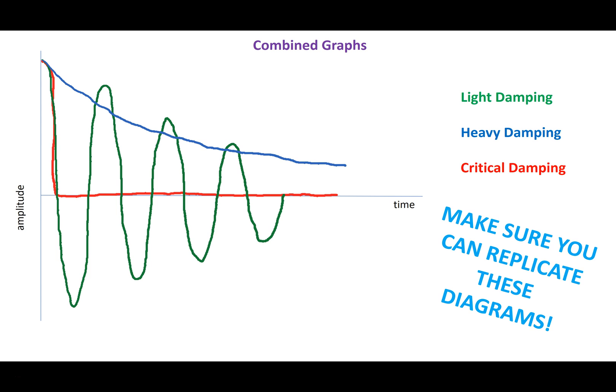This is something you're expected to be able to reproduce in an exam. This is showing the three graphs for light damping in green, heavy damping in blue, and critical damping in red superimposed over each other. Notice that for critical damping, the red line, it comes back to the equilibrium position but does not then complete any further oscillations.